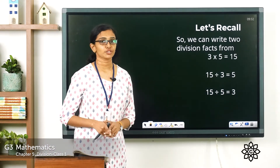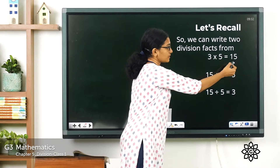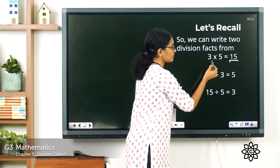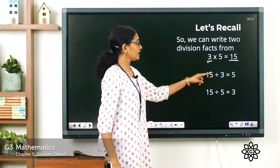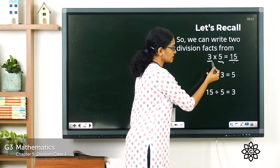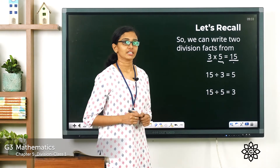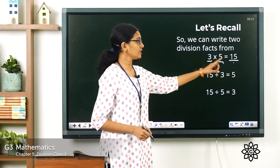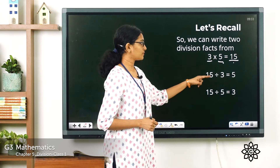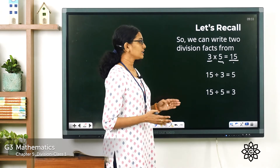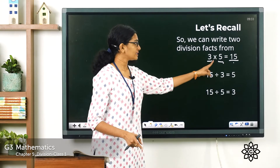So from the multiplication fact 3 × 5 = 15, we can write two division facts. First: 15 divided by 3 is equal to 5, which means when 15 was divided into 3 equal groups, each group had 5 balls. And again, 15 divided by 5 is equal to 3, meaning when 15 was divided into 5 equal groups, each group had 3 balls. So 3 and 5 are numbers which can divide 15 completely.